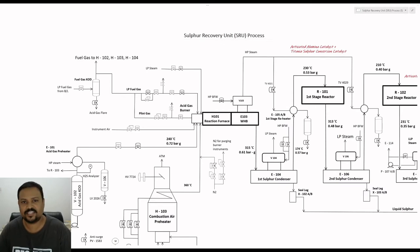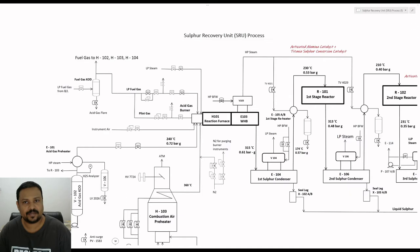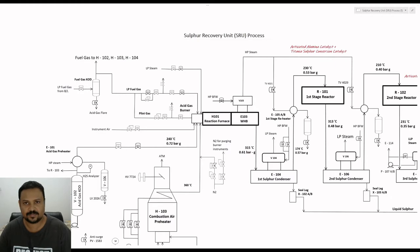The plant has been illustrated along with the process parameters so that it will be easy to understand. I strongly recommend that you watch this video on a large screen so that you can see the parameters and the drawing clearly. The plant illustrated here has an operating capacity of 1300 tons per day of liquid sulfur production with a recovery rate of 99.9%.